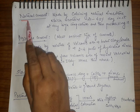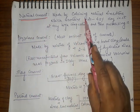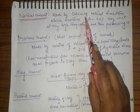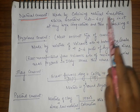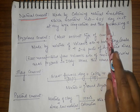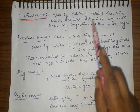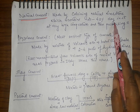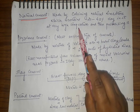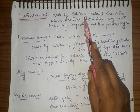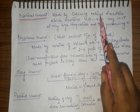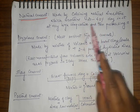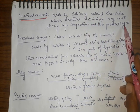Natural cement is made by calcining or strongly heating natural limestone which should contain twenty to forty percent of clay in it. When this limestone and clay mixture is heated at very high temperature, it undergoes calcination. Whatever is formed is then pulverized and is known as natural cement.